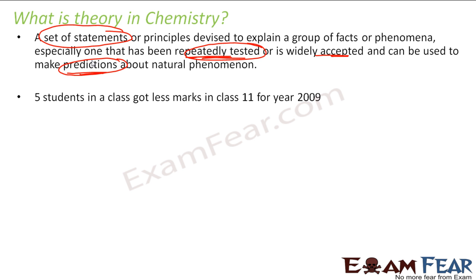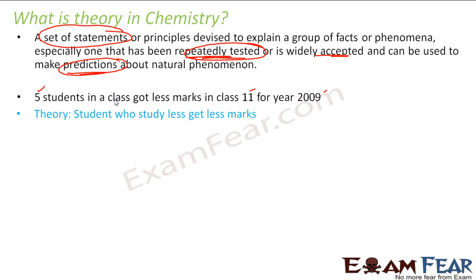Let's take a real-life example. Suppose five students got less marks in class 11 in 2009. The principal asked for an investigation. The teacher found that all those students who didn't study got less marks. So they gave a theory: students who study less get less marks. This theory was based on the data from multiple years, and could predict future results.